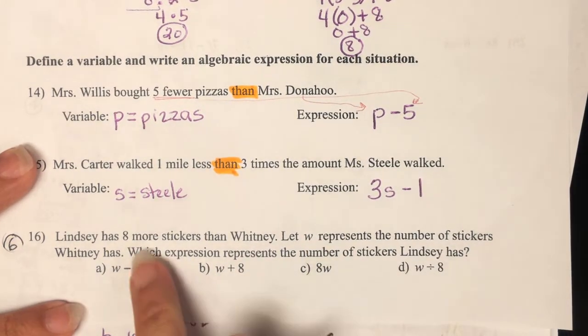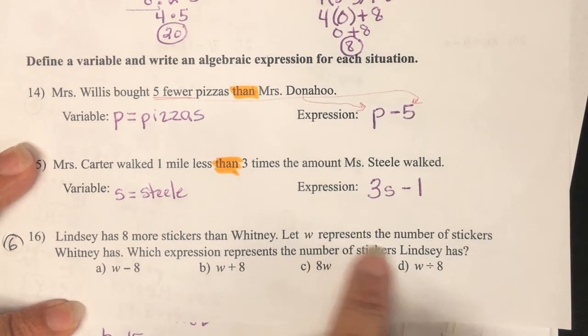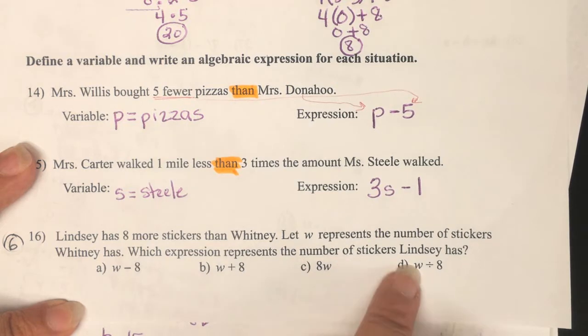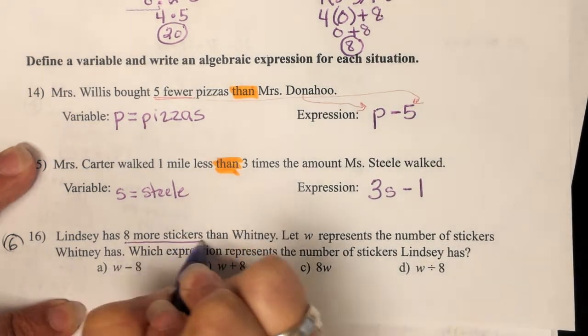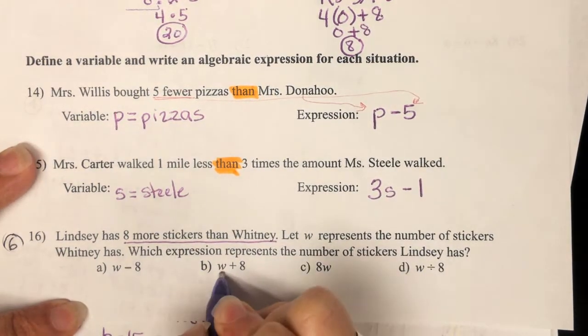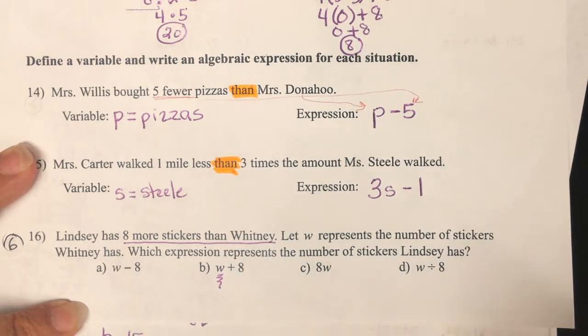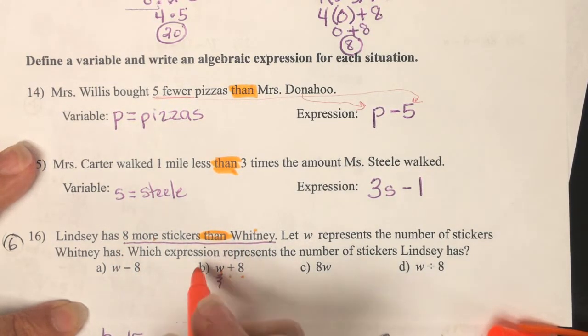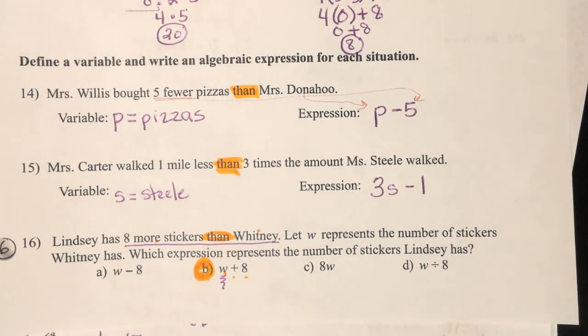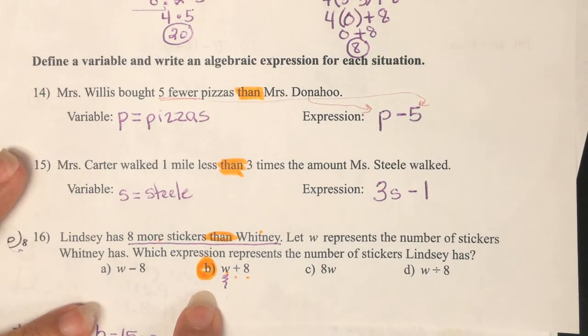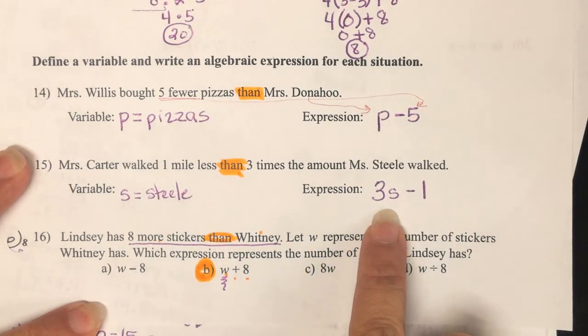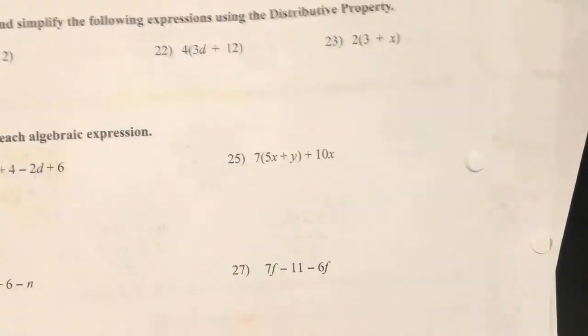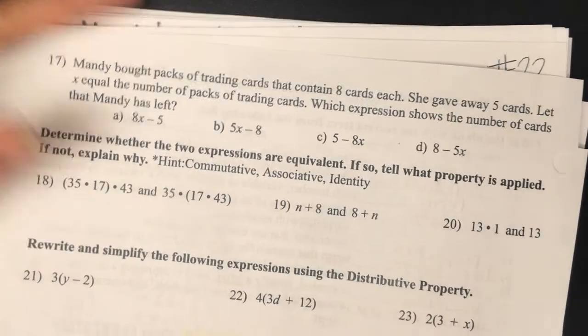Number 16. Lindsay has 8 more stickers than Whitney. Let W represent the number of stickers that Whitney has. Which expression represents the number of stickers Lindsay has? Right here is the key word. 8 more stickers than Whitney. So if you start with Whitney, there's your magic word than. So that's why my W is in front for Whitney. 8 more than means plus 8. It is the letter B. 8 more than, you're adding 8. These were each 2 points. This was 4 points.